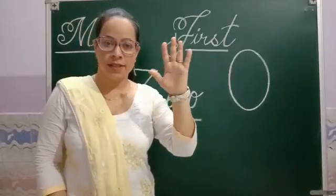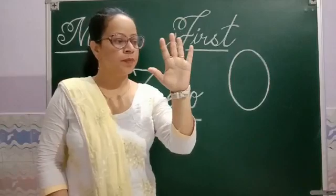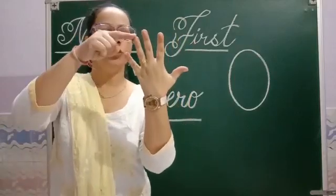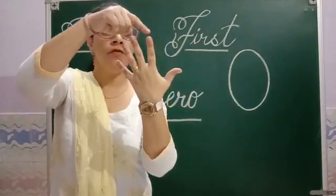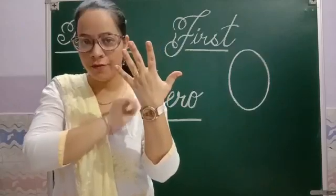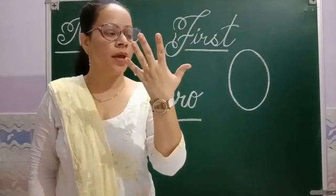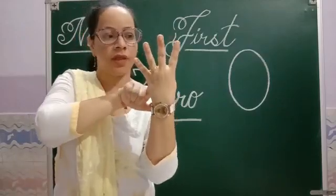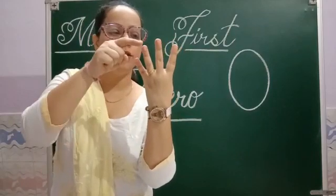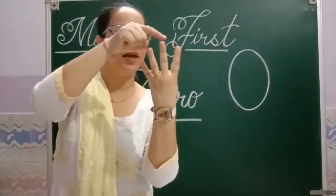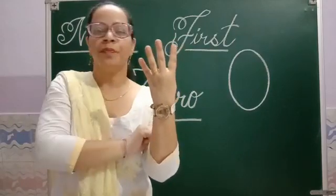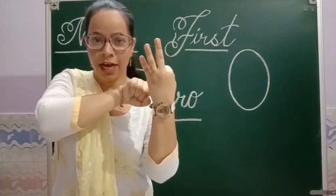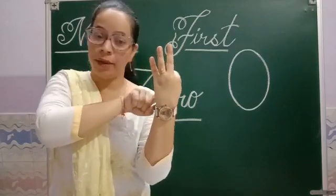Now look at my hand students. Count my fingers. 1, 2, 3, 4, 5. I have 5 fingers. Now I am folding 1 of them. Now count. 1, 2, 3, 4. Now I am folding this one also. How many left? 1, 2, 3. Now there are 3 fingers.